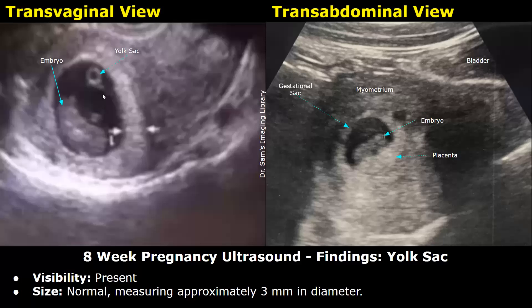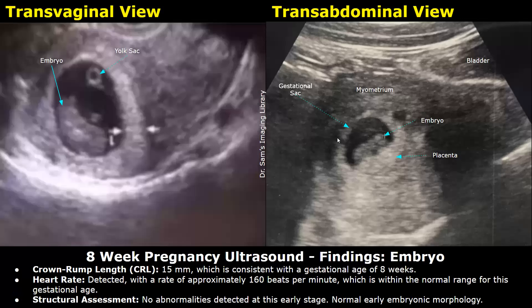Next, you can write the findings of the embryo, starting with the crown-rump length. In this example, it is 15 millimeters, which is consistent with a gestational age of eight weeks.